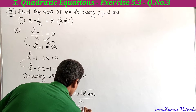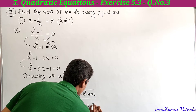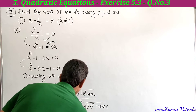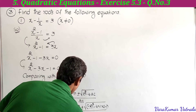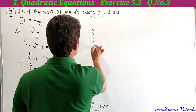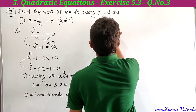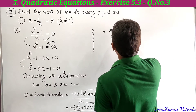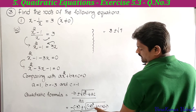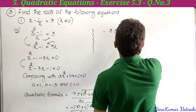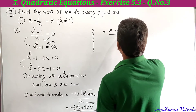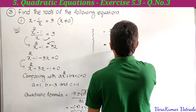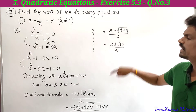Substituting the values: minus of minus 3 plus or minus square root of minus 3 whole squared minus 4 into 1 into minus 1, divided by 2 into 1. Simplifying: plus 3 plus or minus square root of 9 plus 4, divided by 2. That gives 3 plus or minus square root of 13, divided by 2.